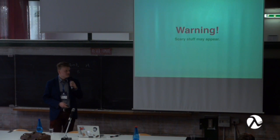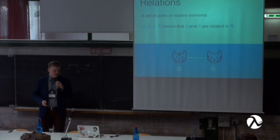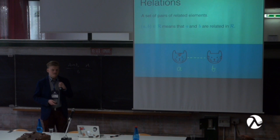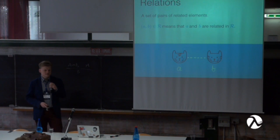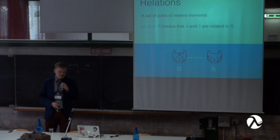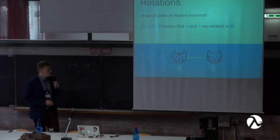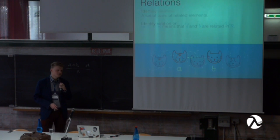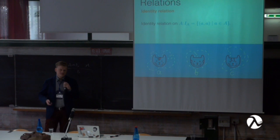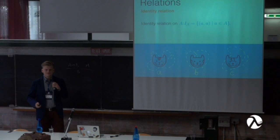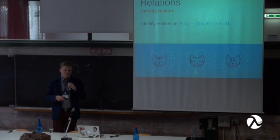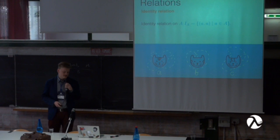The first notion we need to define is a relation — a really simple notion. A relation is just a set of pairs of elements that we say are related. If A and B are related in a relation R, it means the pair (A, B) belongs to this relation. The first useful relation is an identity relation: for any given set, it relates any element with itself and nothing else. So for a two-element set, the identity relation relates the first element with the first, and the second with the second — nothing else.